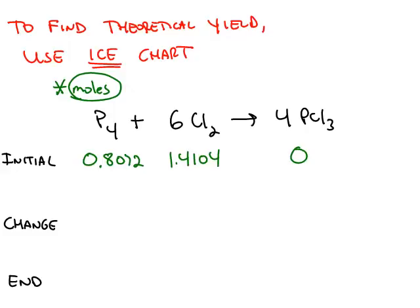Once you've found your limiting reactant, next you want to calculate the theoretical yield of product. To do this, you're going to use an ICE chart, where ICE stands for initial, change, and end.